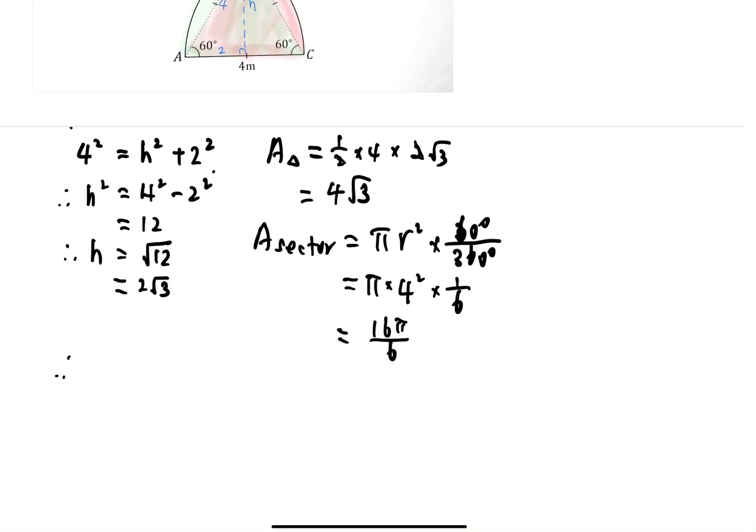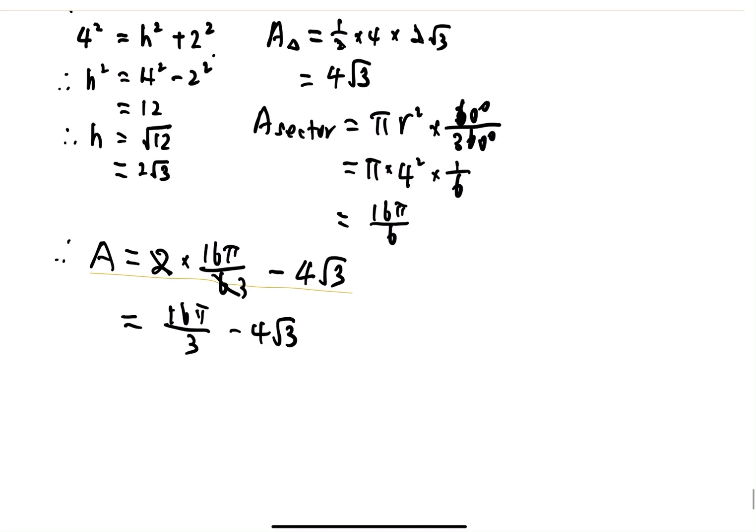Therefore the total area would equal 2 of the area of sectors minus one area of triangle, which gives us 16π/3 minus 4√3. Or if you want to make it even more simple with the same denominator, which equals (16π - 12√3)/3.